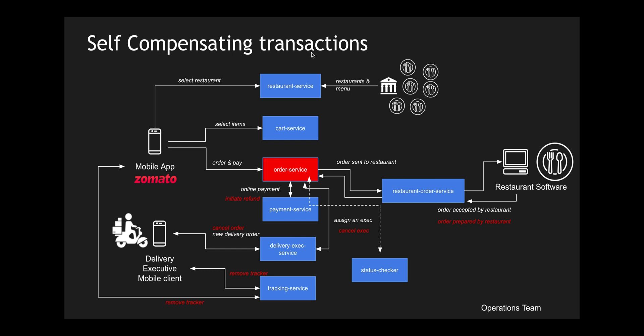If the order service is down, the status checker sends a message to an operations team and tries to self-heal — it can spin up a new order service in a new cluster or region. If the payment refund did not happen after a specific amount of time, it can trigger the refund again, knowing the earlier refund did not trigger successfully. Similarly, it can identify if delivery executives are not assigned properly. The status checker is like an intelligent box that understands how systems should behave with respect to different events.